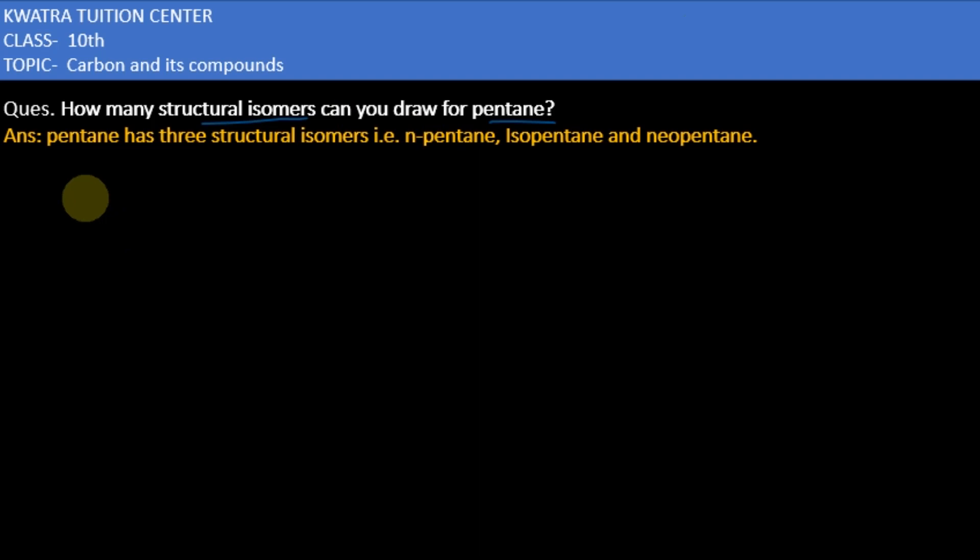Isomers are nothing but the same formula but different structures. Pentane formula is C5H12, and this is an alkene. There are three isomers that exist which are n-pentane, isopentane, and neopentane. First, let's make the structure.